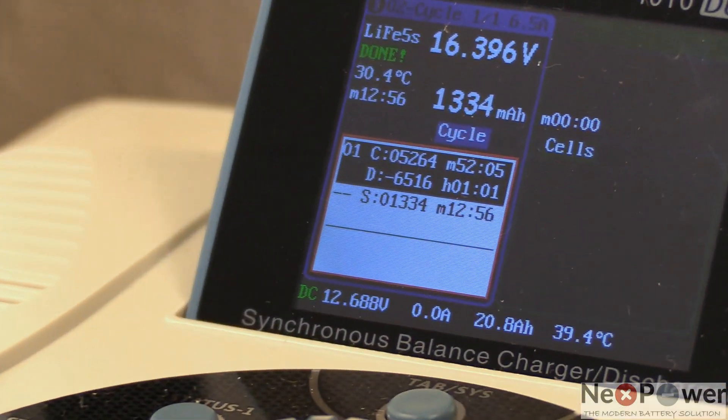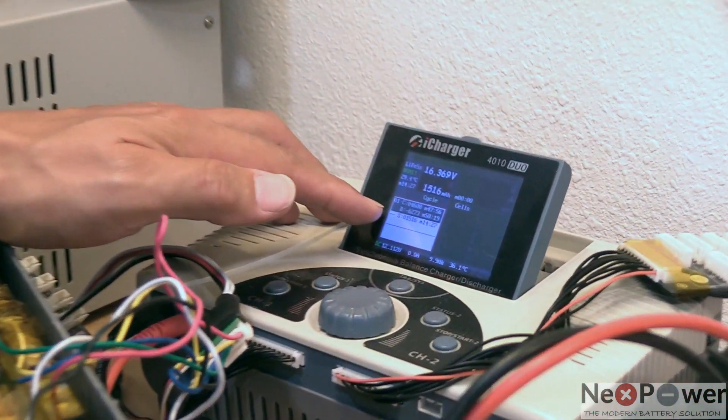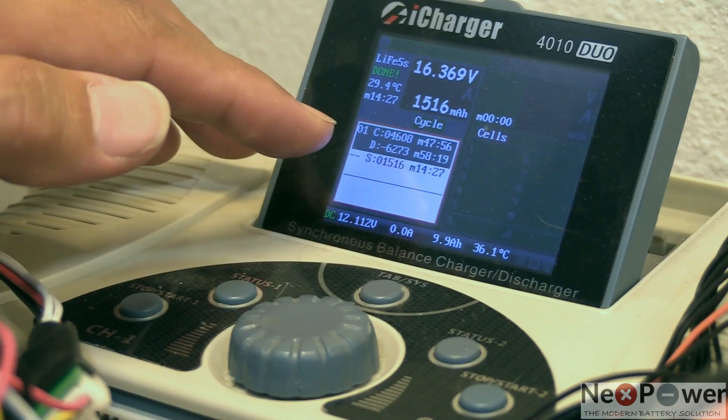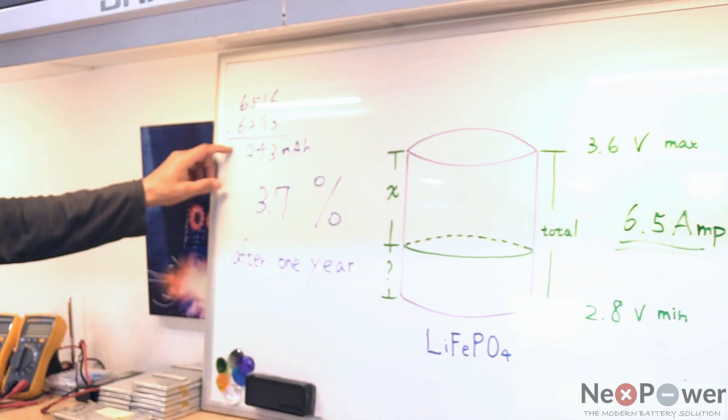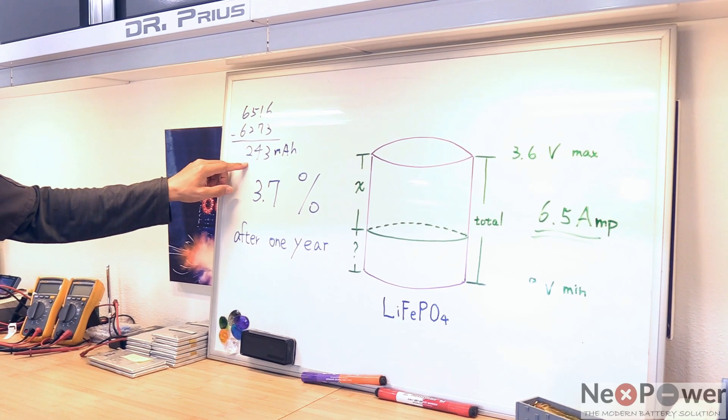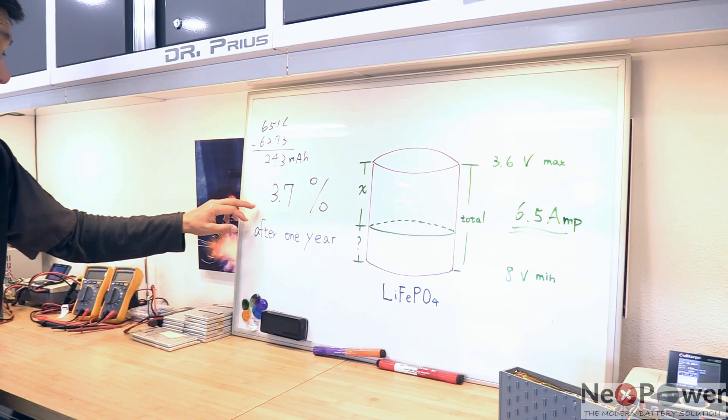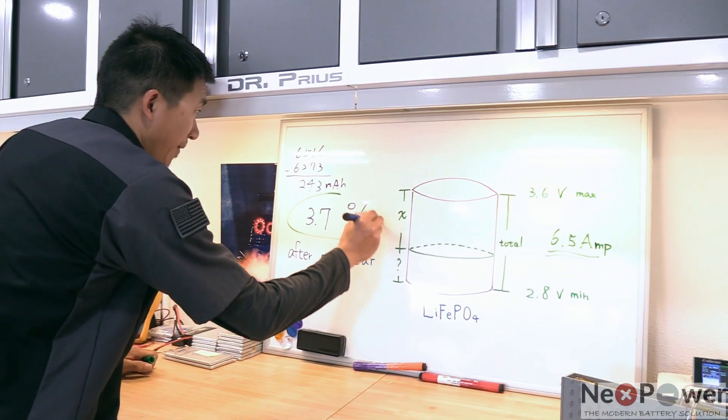And at this corner, the one year torture test lithium battery portal type, it has a total capacity left of 6,273 milliamp. Let's do some math on this: 6,500 divided by 6,273, that's a loss of 243 milliamp over a year period, and the total degradation is 3.7%.